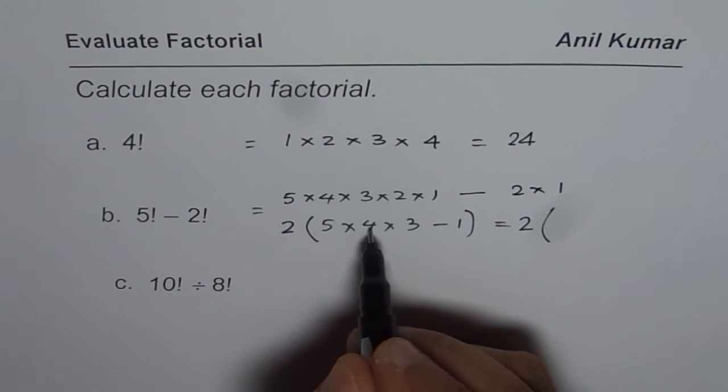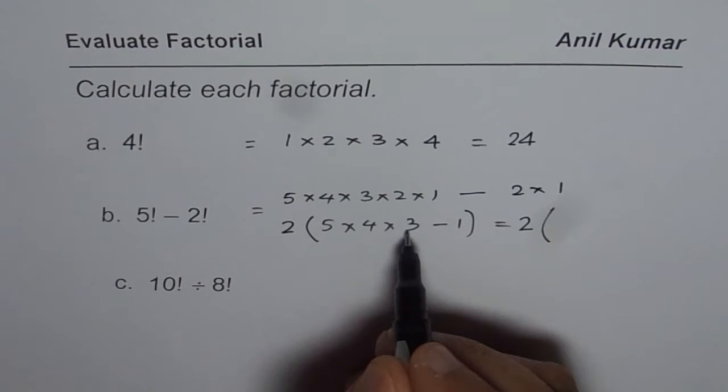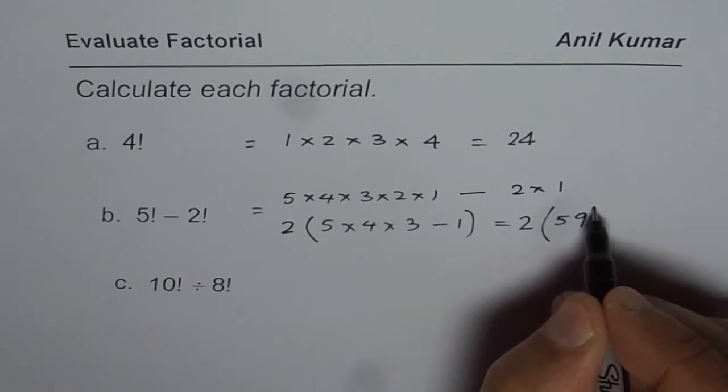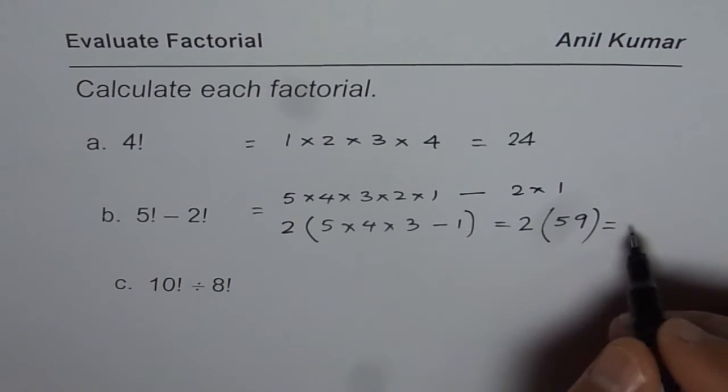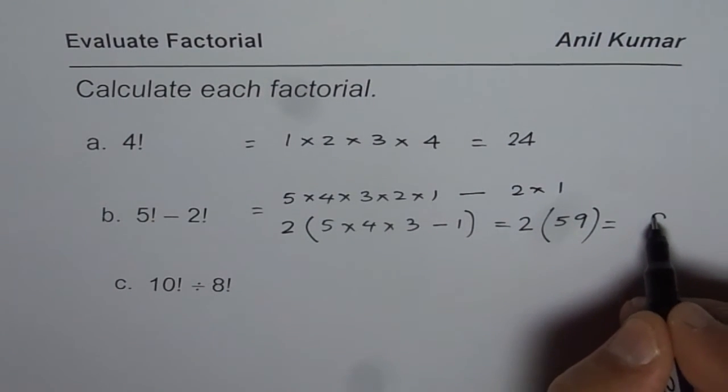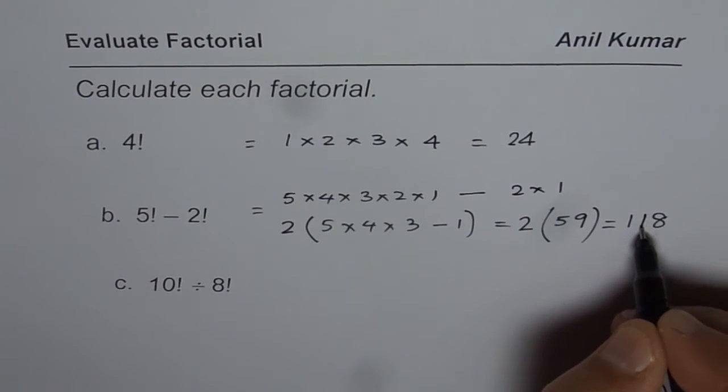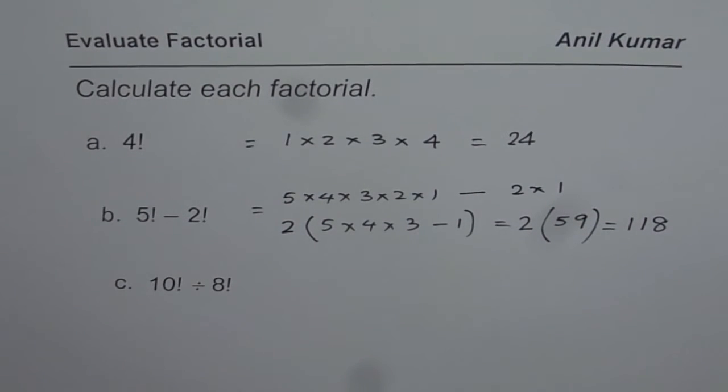So 5 times 4 is 20, 20 times 3 is 60, 60 minus 1 is 59. So when you multiply this, you get 2 times 9 is 18, so 2 times 5 is 10 and 1 is 11. So 118 is your answer. So that is another way of doing it, you could straight away find the answer also.